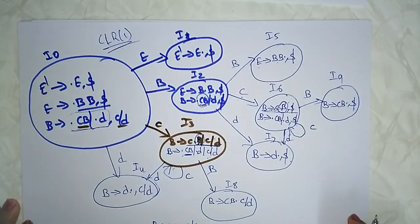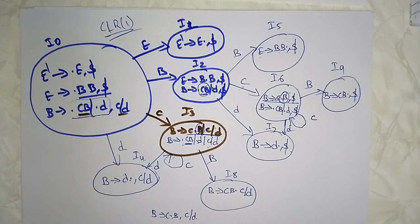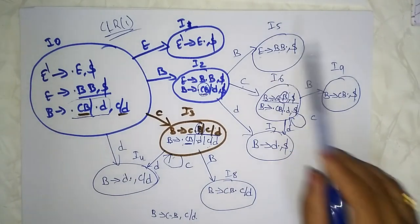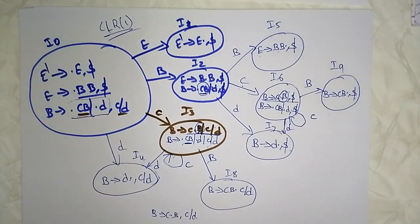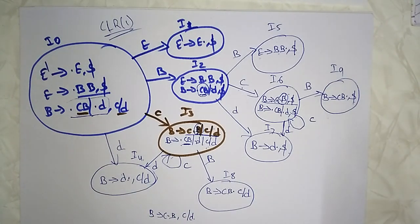Observe that CLR(1) has many more states compared to LR(0) and SLR(1). The total number of states here is 10 states (I0 through I9). More states means more rows in the parsing table. We'll see the CLR(1) parsing table in the next video.